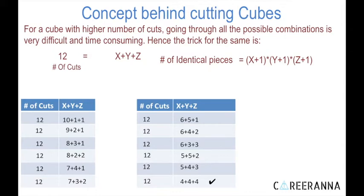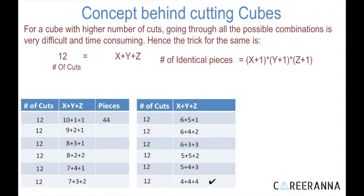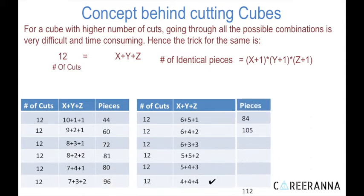Now let's identify which combination gives the maximum number of identical pieces. For 10+1+1: (10+1)(1+1)(1+1) = 11×2×2 = 44. For 9+2+1: (10)(3)(2) = 60. For 5+4+3: 6×5×4 = 120. For the last case, 4+4+4: (4+1)(4+1)(4+1) = 5×5×5 = 125. So 125 is the maximum. Always look for that combination where x, y, and z are as close to each other as possible.